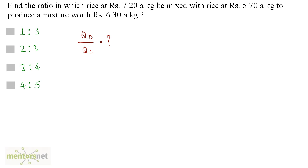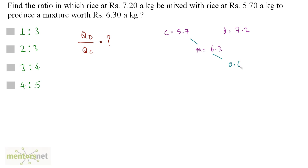The rate of the cheaper rice is Rs.5.70 a kg and the rate of the costlier rice is Rs.7.20 a kg. The mean price M equals 6.30. On the right hand side, the difference between the cheaper price and M is 0.6, and on the left hand side the difference between the costlier price and M is 0.9.